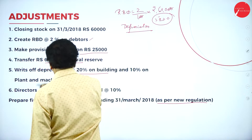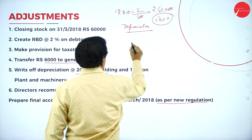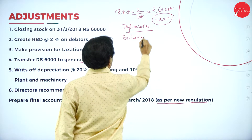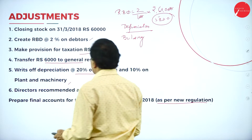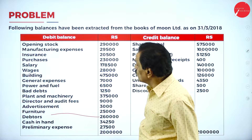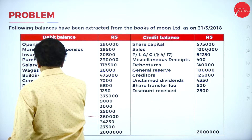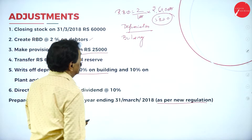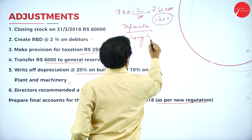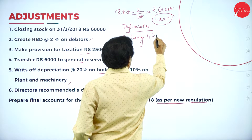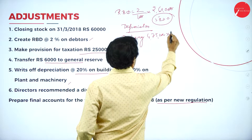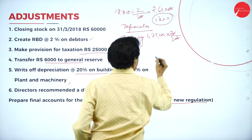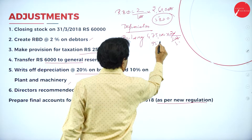Next, depreciation. First on building: 20 percent is the rate. Building value is ₹4,75,000. So 20% of ₹4,75,000 equals ₹95,000. This depreciation goes against the building.